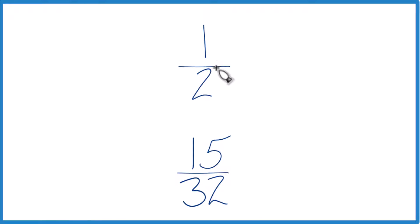You could divide 1 by 2 on a calculator, get a decimal, divide 15 by 32 on a calculator and get a decimal. It's one way to do it.